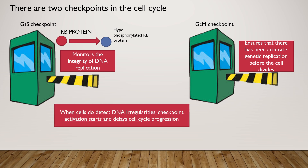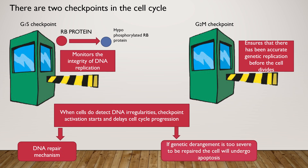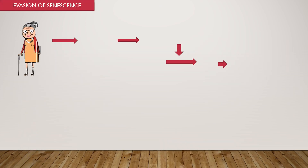When cells with DNA irregularities are detected, the checkpoints get activated and delay cell cycle progression. This in turn triggers DNA repair mechanisms. If the genetic derangement is too severe to be repaired, the cell will undergo apoptosis.